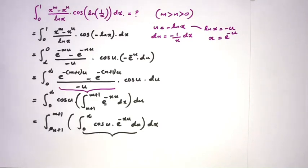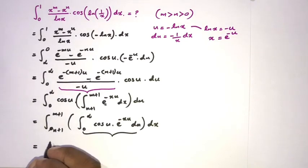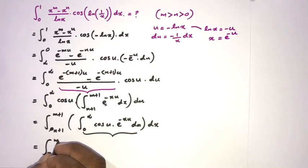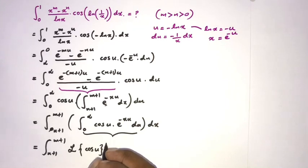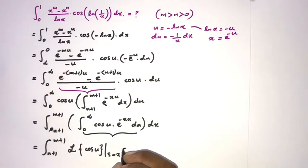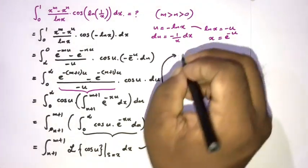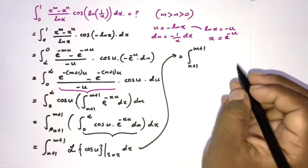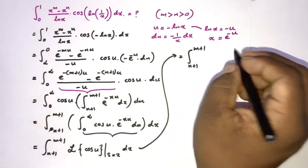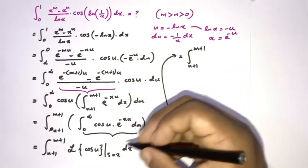As discussed in a previous video, the inner integral equals the Laplace transform of cosine of u evaluated at s equals x. So we write the integral from n+1 to m+1 of the Laplace transform of cosine at s equals x, dx. The Laplace transform of cosine is x over x squared plus 1.